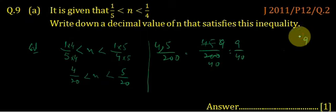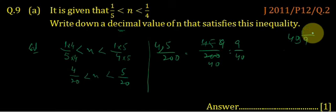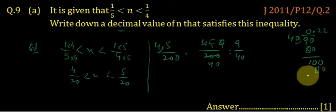When 9 divided by 40, since we have to write the decimal, we put 0. 40 goes into 80 twice with remainder 10. We write one more 0, 40 goes into 80 one more time twice. So 0.22.